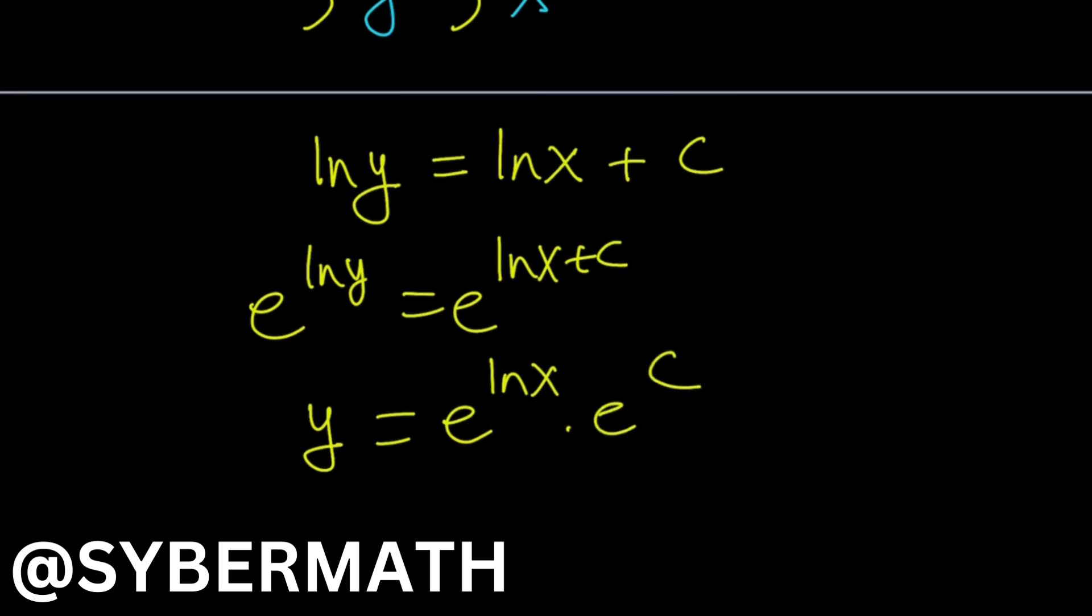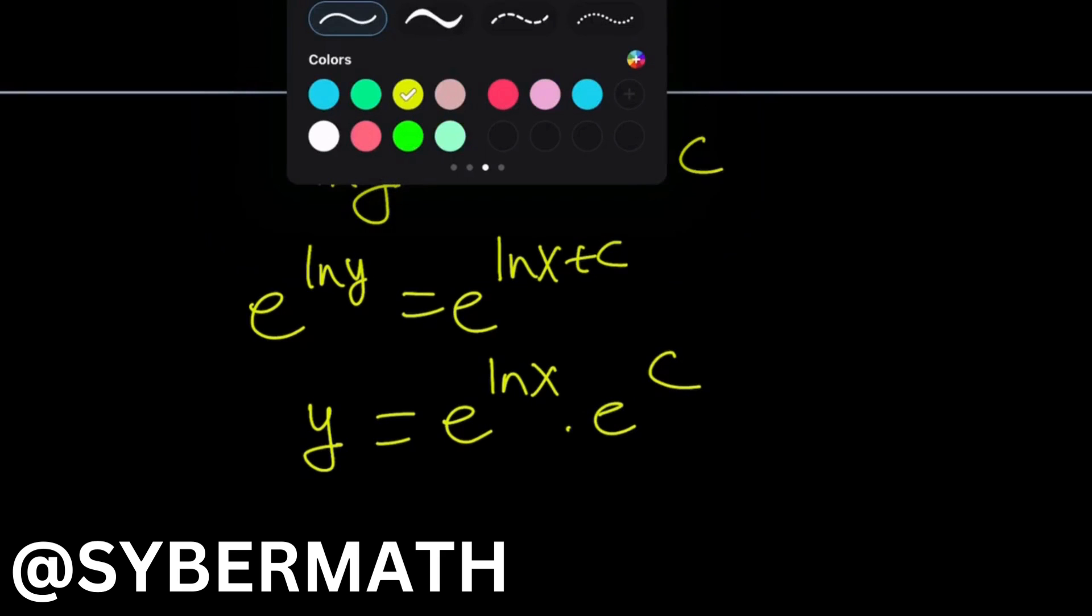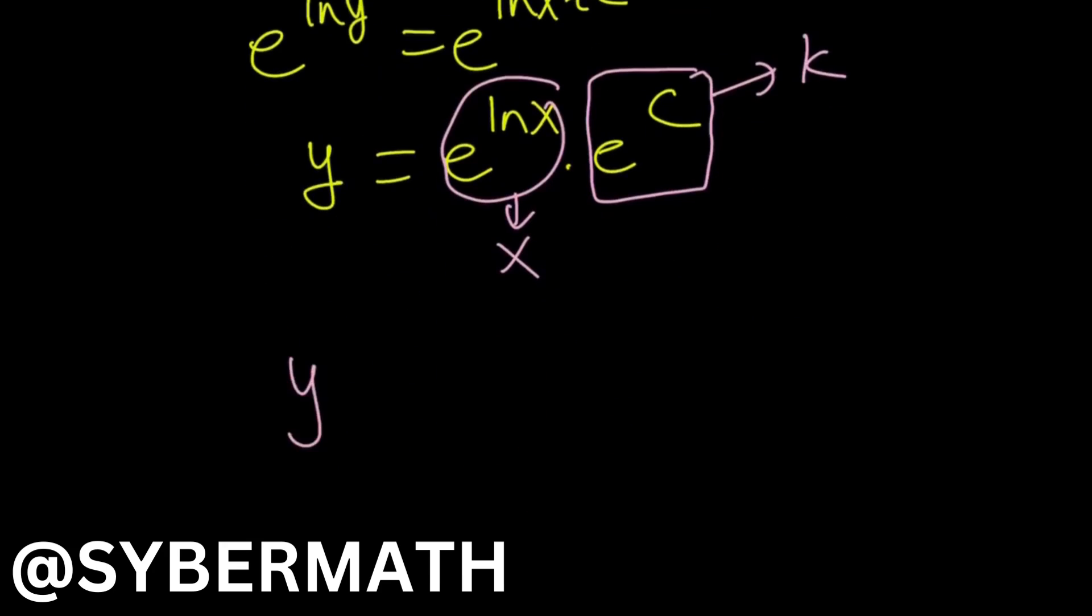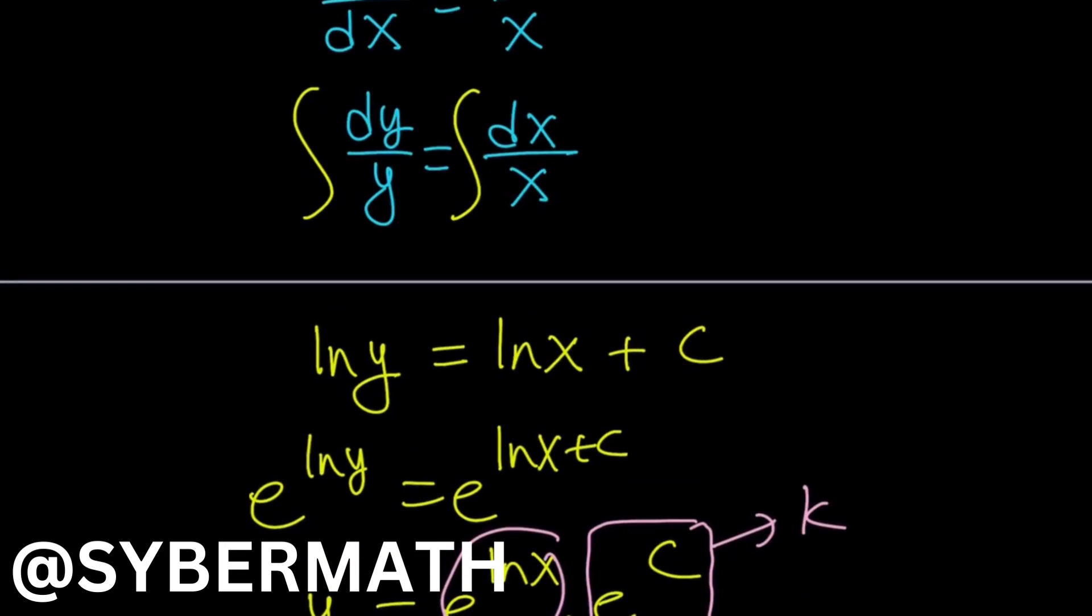But e to the c is also constant, right? Why? Because c is constant. A constant to the power constant is also constant. Let's call this k. And e to the power ln x is the same as x. So we get the following: y equals kx. Wow, it's that simple. Yes.